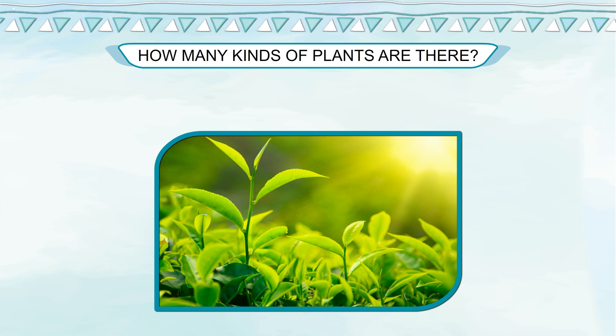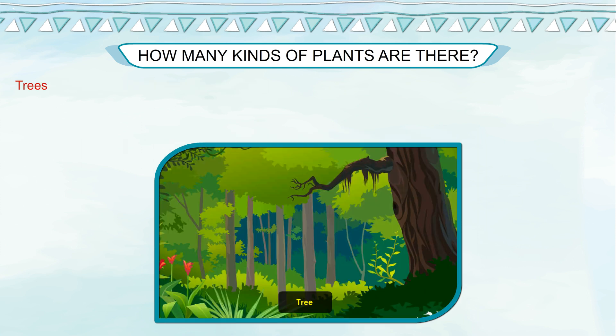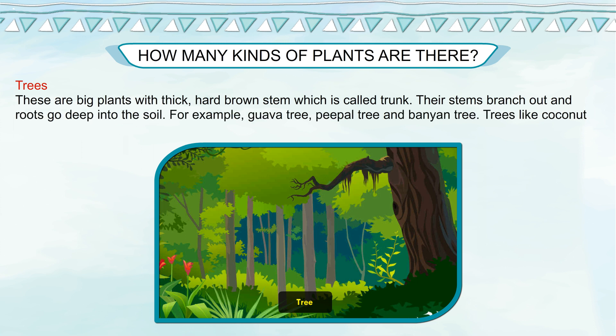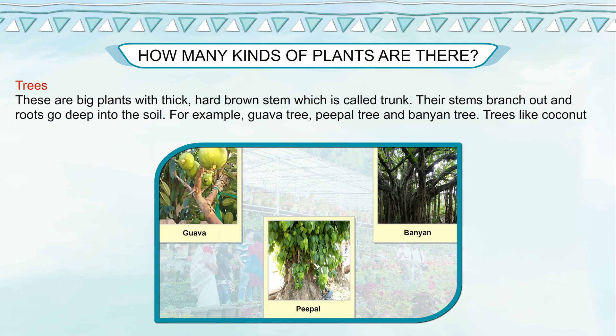How many kinds of plants are there? Plants can be grouped into four categories. Trees: these are big plants with thick, hard brown stem which is called trunk. Their stems branch out and roots go deep into the soil. For example, guava tree, peepal tree and banyan tree.